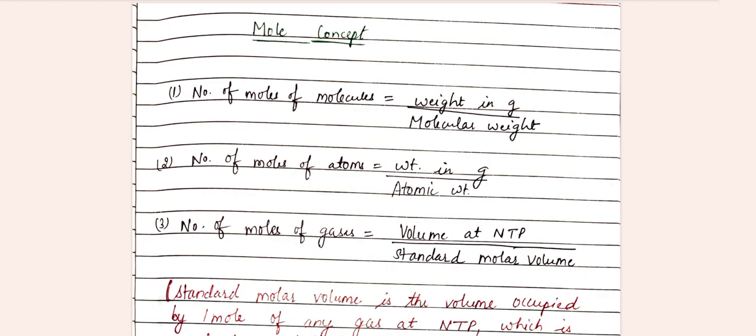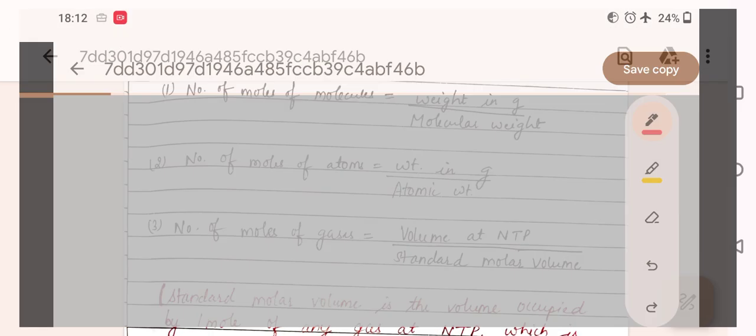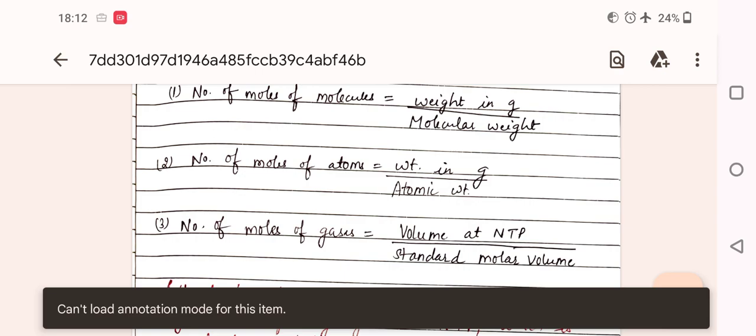If we have atoms, then number of moles of atoms is calculated by dividing the weight in grams divided by atomic weight.